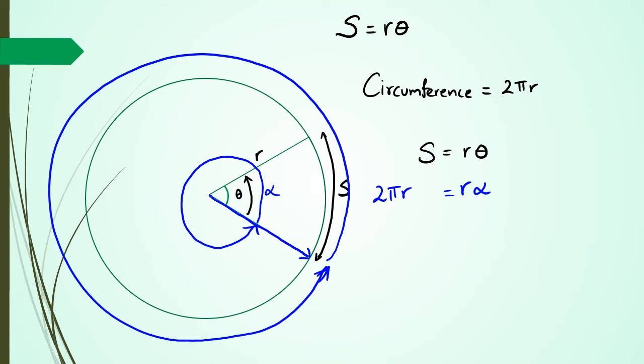Now if I think of alpha in degrees, alpha is actually going the whole way around, which is 360 degrees. So what I could do here is I can write 2 pi r equals r times 360 degrees. Which means I can cancel out the two r's, and I can have 2 pi radians equals 360 degrees, because my two r's cancel out.